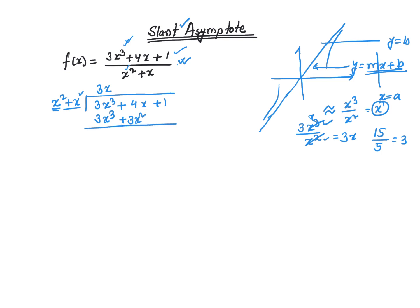Now, the way you do long division, you subtract the bottom from the top. 3x cubed and 3x cubed are going to cancel. But there is a squared term in the bottom but no corresponding squared term on the top — that's like having 0 times x squared. So 0 times x squared minus 3x squared is going to give you negative 3x squared.